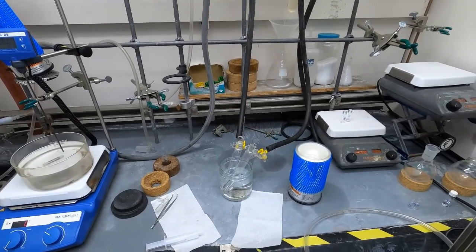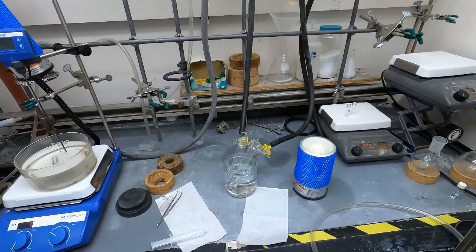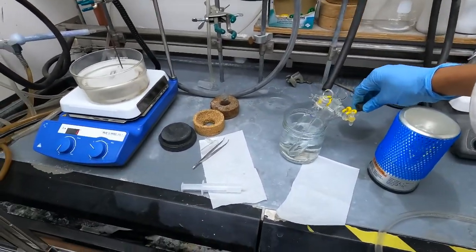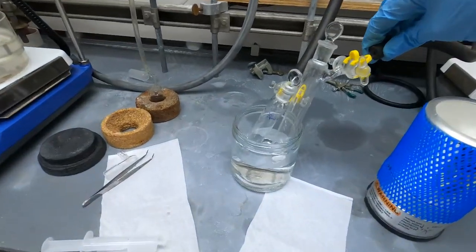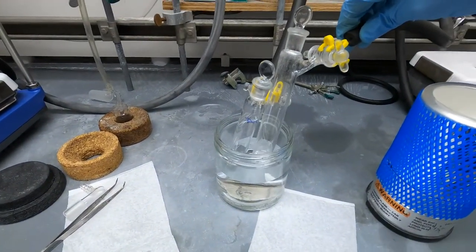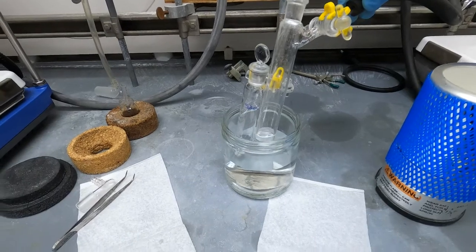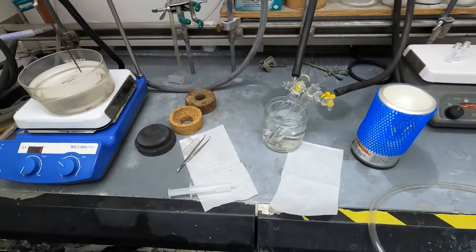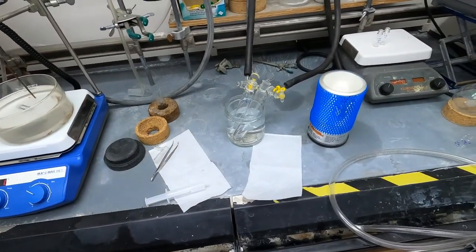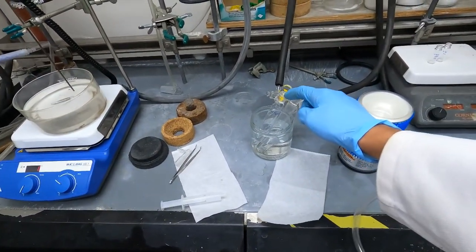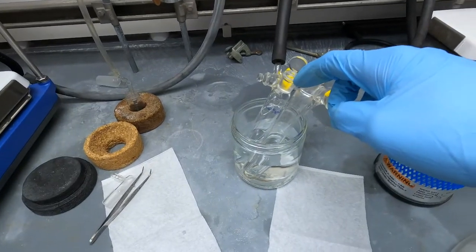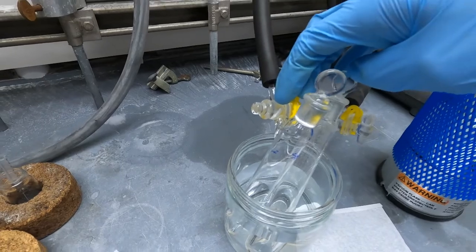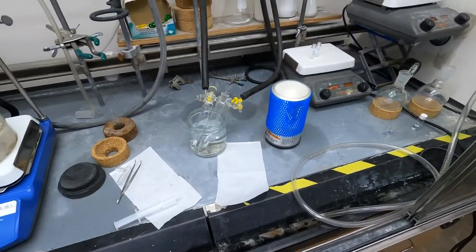A couple things that you're going to need before you get started with your freeze pump thaw. I have here two different reactions in Schlenk tubes. A Schlenk tube is a pretty basic piece of glassware. We have an opening here that's shut and then an opening with a stopcock that's connected to my Schlenk line.